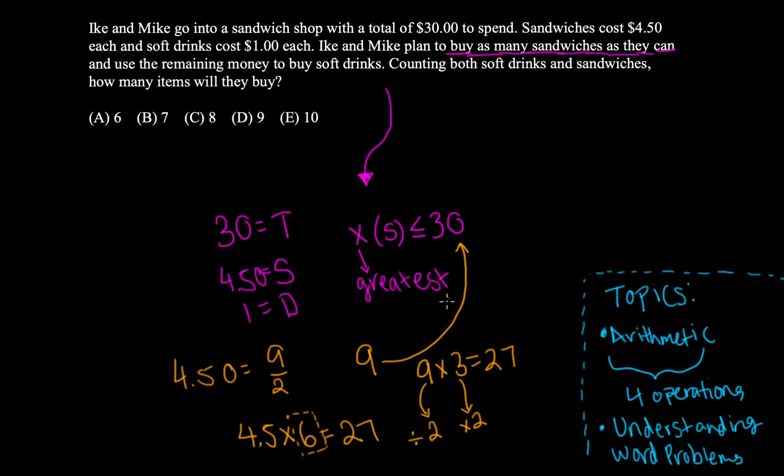Is 27 really the greatest multiple I can get? So what I would do is I would go ahead and say 27 plus 4.5. I would add them up, and I would find that that's equal to 31.5, which is indeed greater than 30.